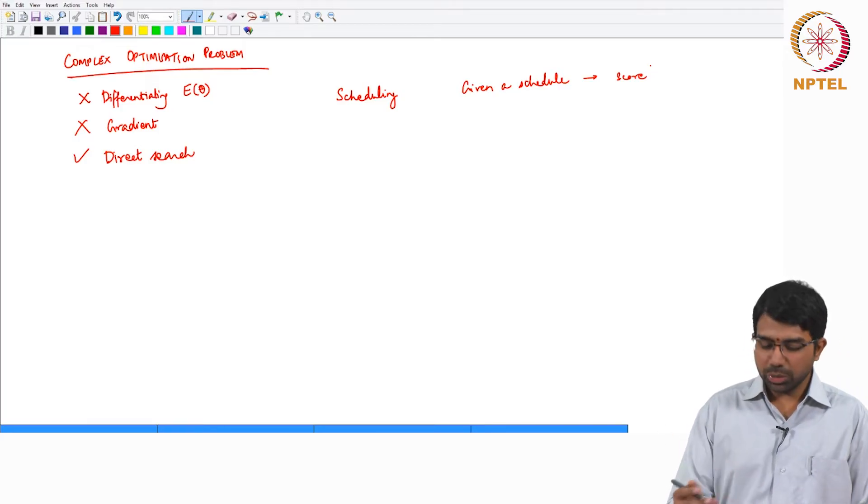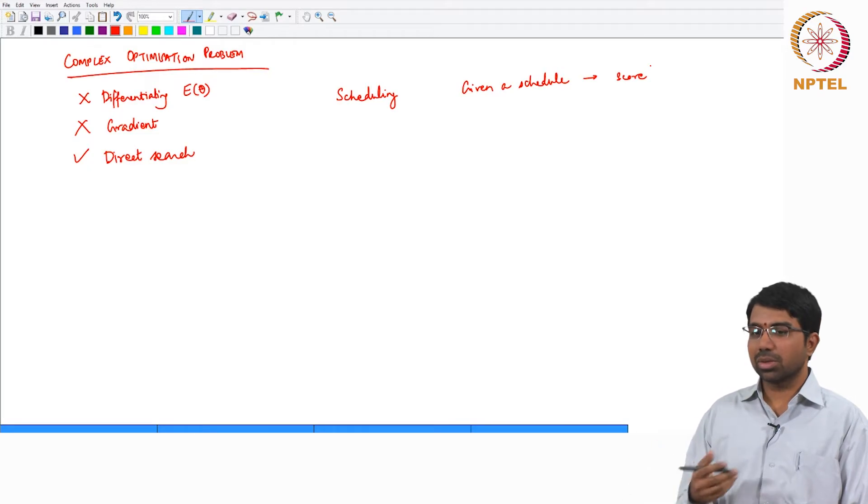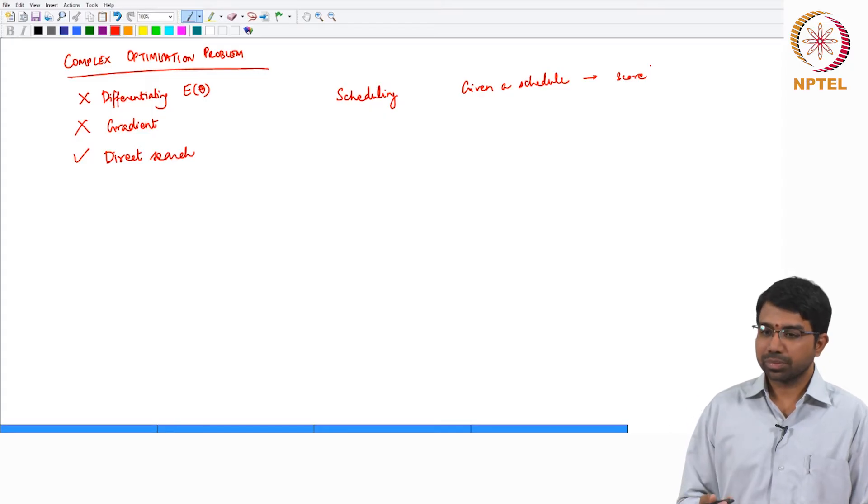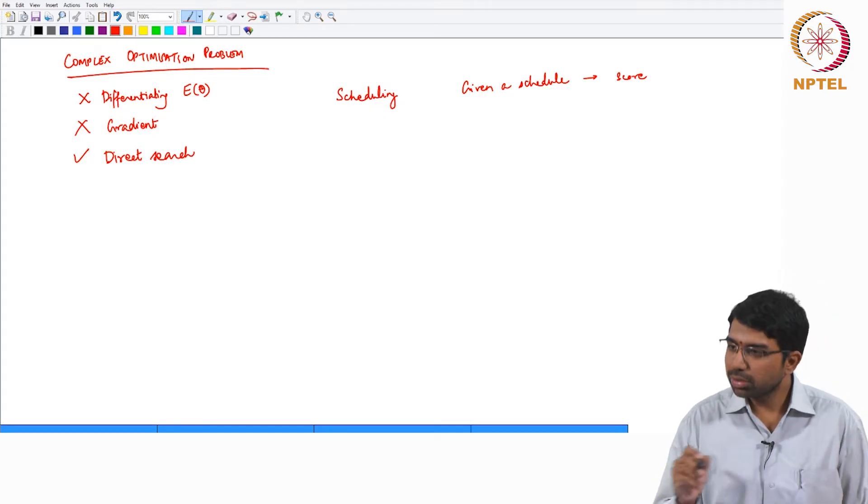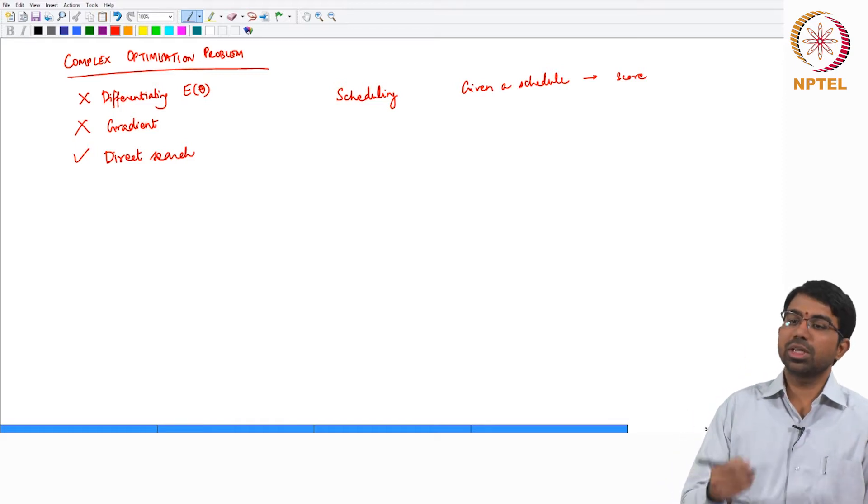But what would we even mean by computing a differential of this or by trying to compute the gradient of this? It is not a continuous variable. It becomes very difficult. So given a schedule, you can compute a score.